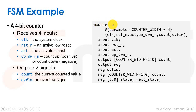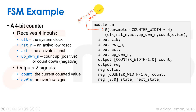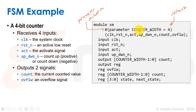Taking that as our interface, we define our module header. We call the module 'SM' for state machine and list our ports: clock, reset, act, up_down, count, and overflow. We also add a parameter declaration — not a delay. We declare a parameter called 'counter_width' with a default value of four. This default can be overridden in our testbench when we instantiate the module, making our code parametrizable for different counter sizes.